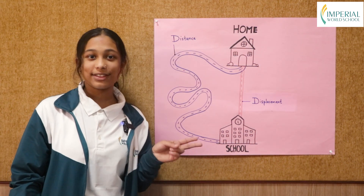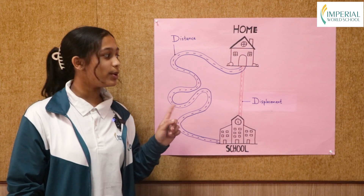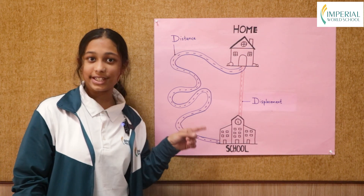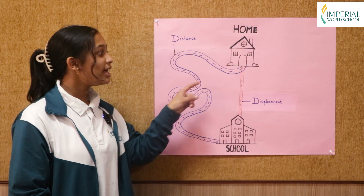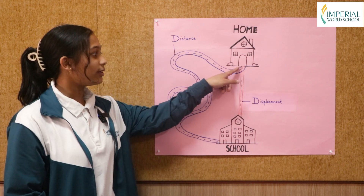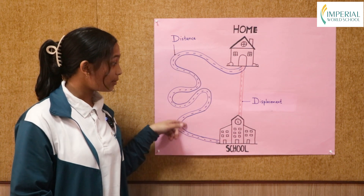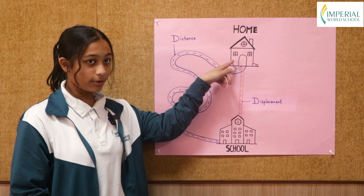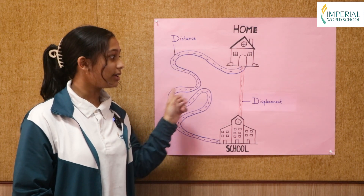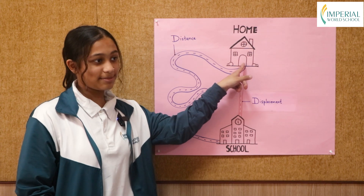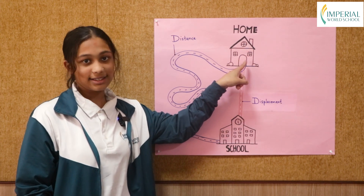There are two important things you have to note about distance and displacement. The first is that displacement can be zero, but the distance is never zero. So if I travel from my home to my school and travel back from school to my home, the distance is double the blue path, but as I have not displaced anywhere, the displacement is zero.